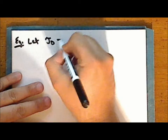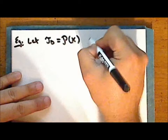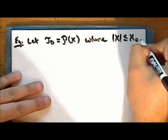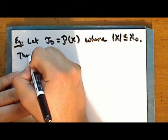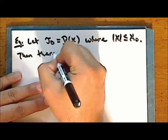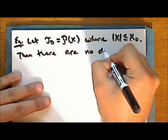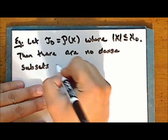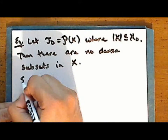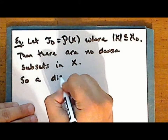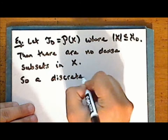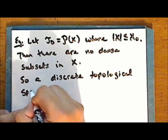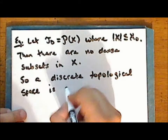Let tau sub d be the power set of X where the set X is countable — that is, we have the discrete topology on X. Then there are no dense subsets in the discrete space, and so a discrete topological space is not separable.